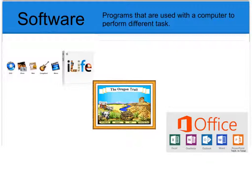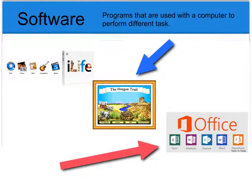Another type of software that you may be familiar with is Oregon Trail, a game format software that's usually on a PC or a Mac that you play games with. An additional piece of software is Microsoft Office, which has programs called Excel for spreadsheets, Outlook for email, Word for word processing and typing, and PowerPoint which is a presentation software. These are different softwares you may use on a computer at home or at school.